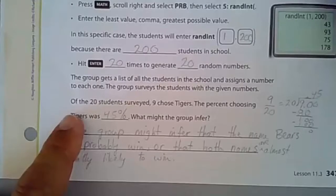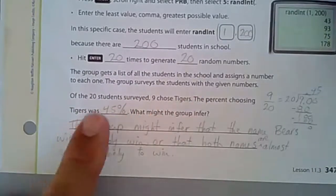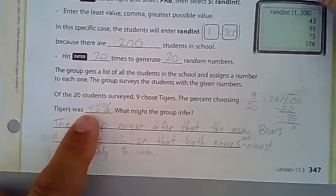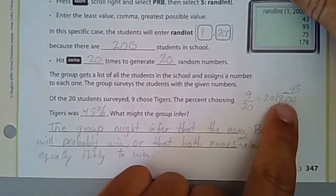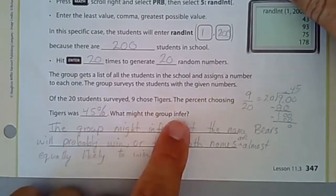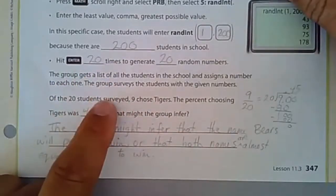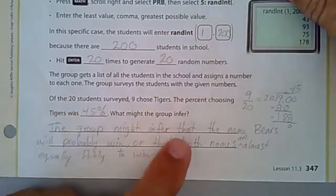The group surveys the students with given numbers. Of the 20 students surveyed, nine chose Tigers. The percent choosing Tigers was 45%, and that's because we have 9 out of 20, and when you divide that you get 0.45, which is 45%.